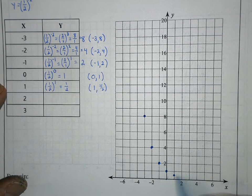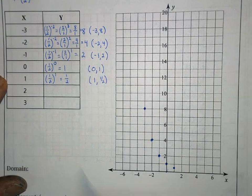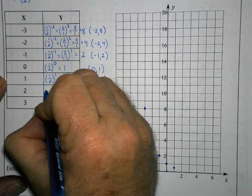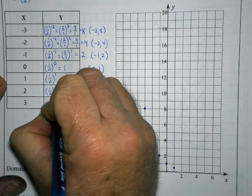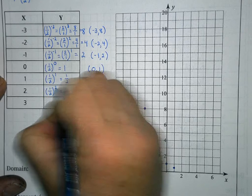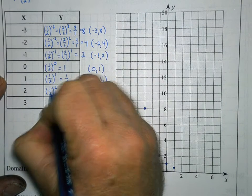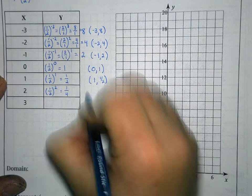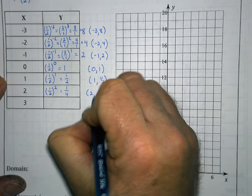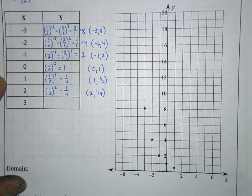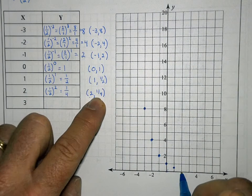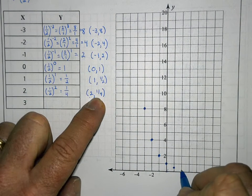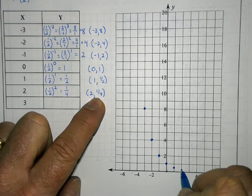Substituting 2 for x, my expression becomes one-half to the second power. 1 squared is 1 and 2 squared is 4, giving me one-fourth. So when x is 2, y is one-fourth. I go over to 2 on the x-axis and up a fourth of a spot — that's half of a half — so I go halfway to a half, which is about right there.